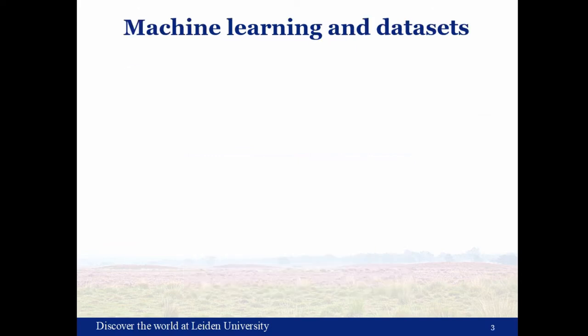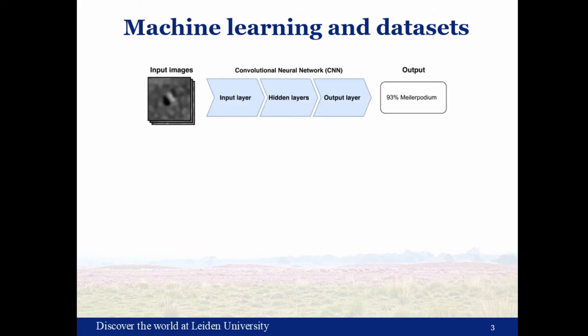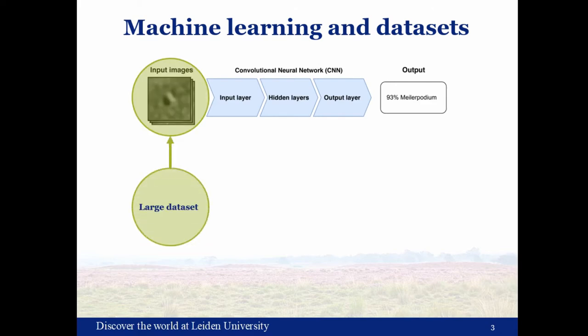So why do we need a large learning dataset? For the last decade, archaeologists have started using machine learning, and especially deep learning, for detection of objects in remotely sensed data. We are by now all sort of used to convolutional neural networks and CNNs, and these seem very promising for this task of object detection.